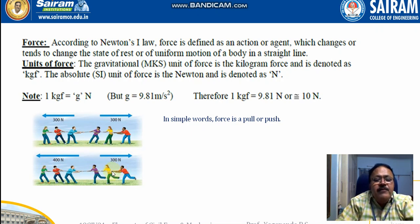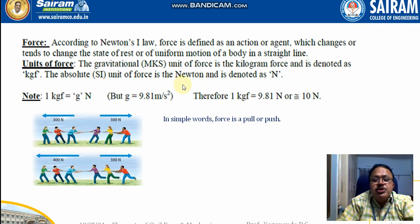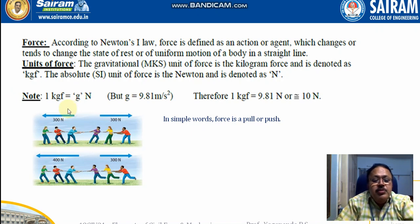The unit of force in the MKS system is kilogram-force, noted as KGF. In SI units, it is called Newton, denoted as N. One kilogram-force equals 9.81 Newtons, or approximately 10 Newtons.